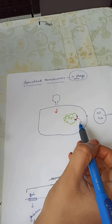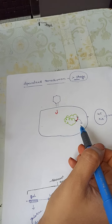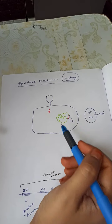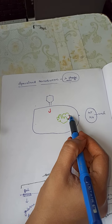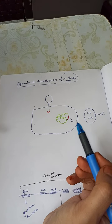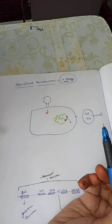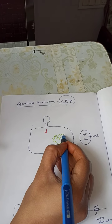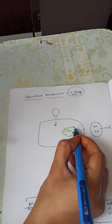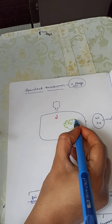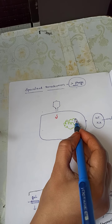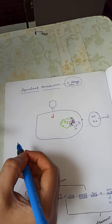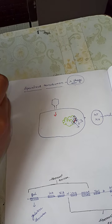So the viral genome usually makes many copies and we know how the lytic cycle happens. But sometimes this excision may not happen in the normal way — aberrant excision can happen. Aberrant excision is a wrong excision where some portion of the bacterial genome can get excised along with the viral genome.